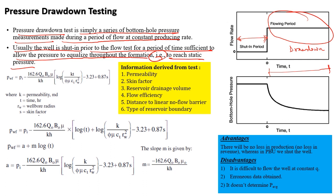Information derived from the test includes permeability, skin factor, reservoir drainage volume, flow efficiency, distance to linear no-flow barrier, and type of reservoir boundary. We will discuss these things in the coming slides.